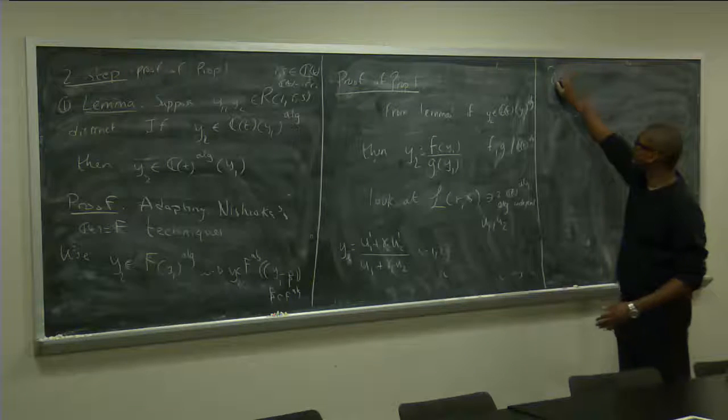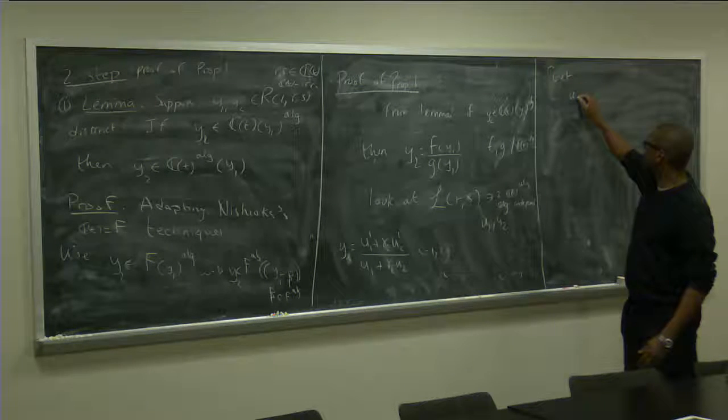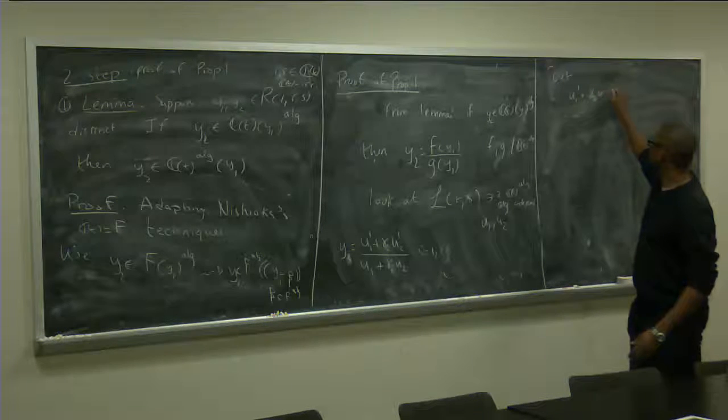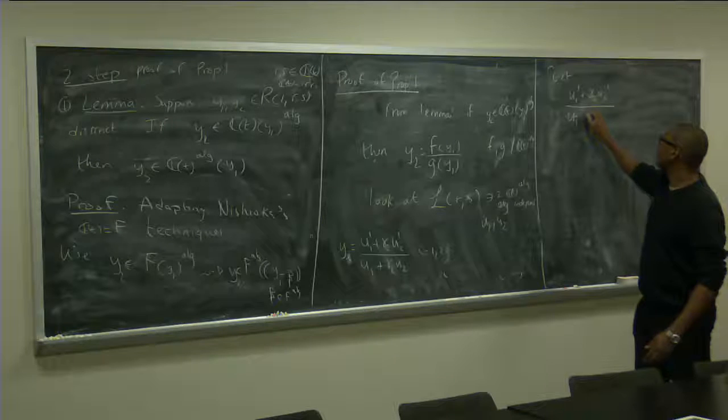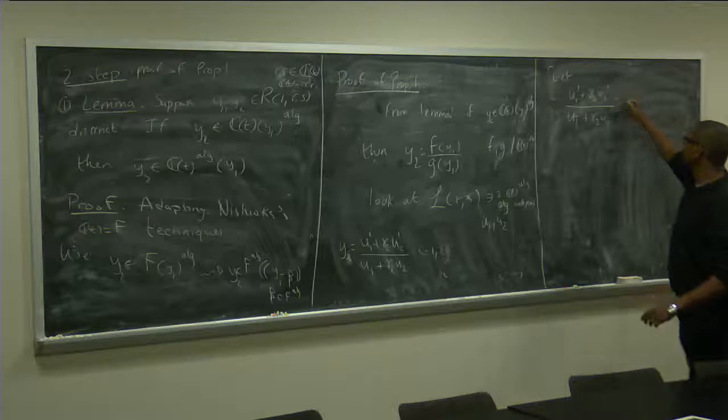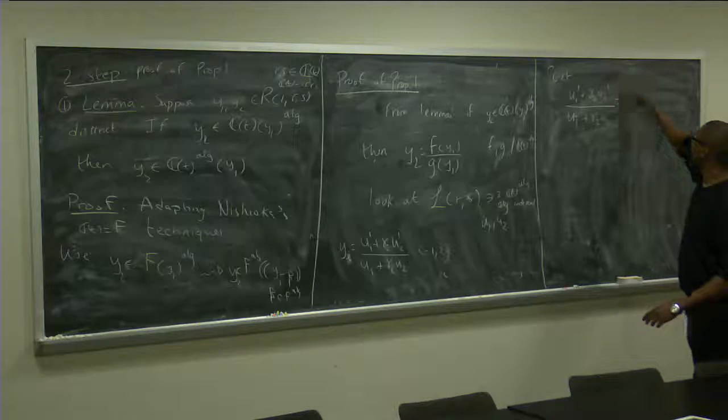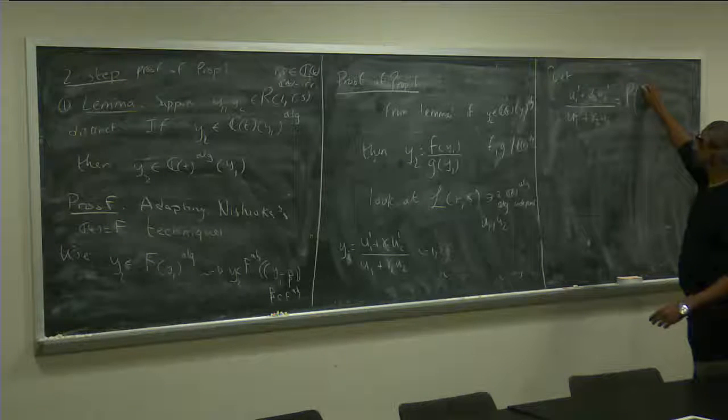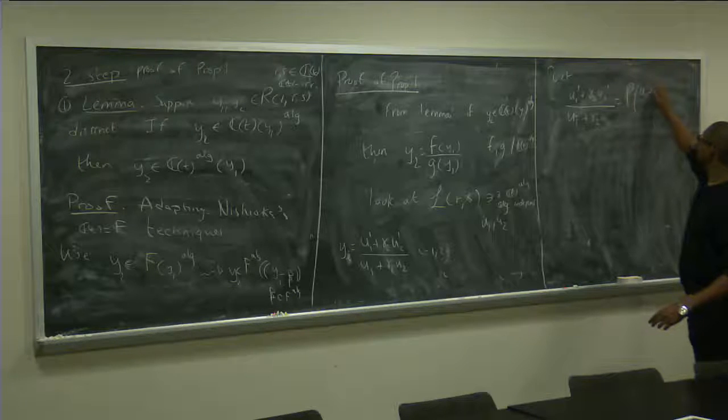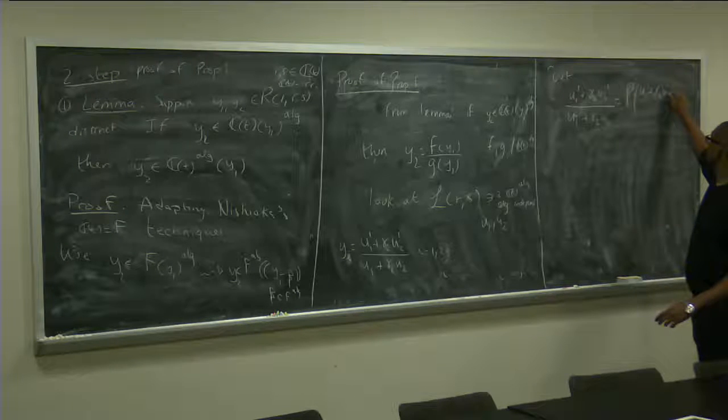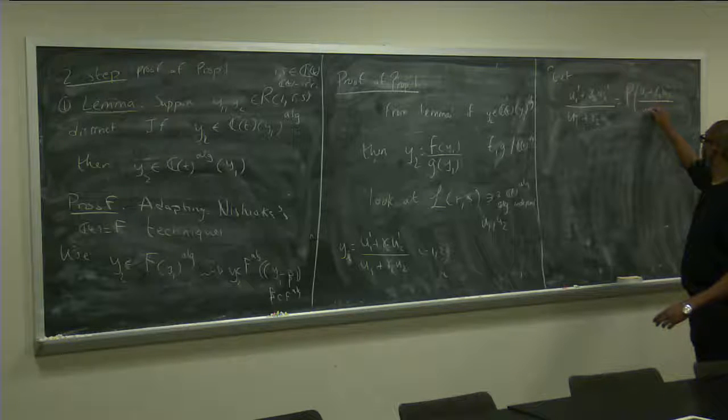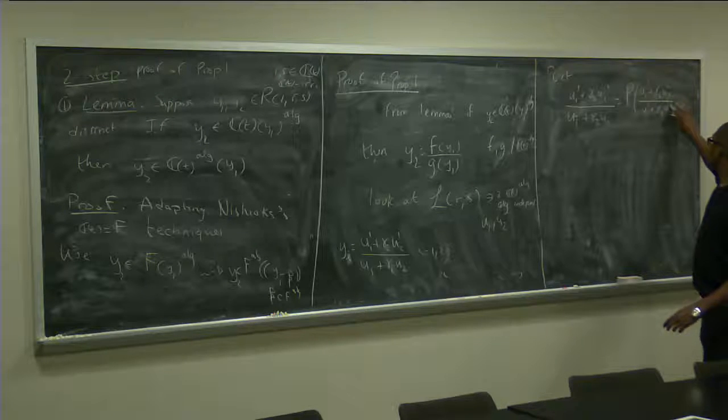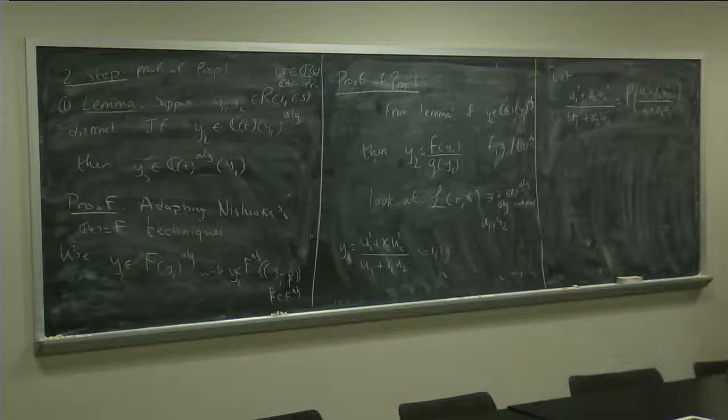And get, you get, u1 prime plus u2 gamma2 u2 prime over u1 prime plus gamma2 u2 equals, let's call the entire rational function p, although that should be like multiplication f1 the problem here.